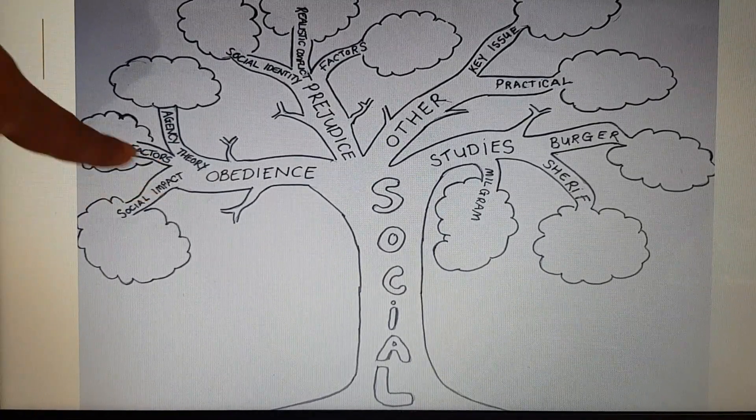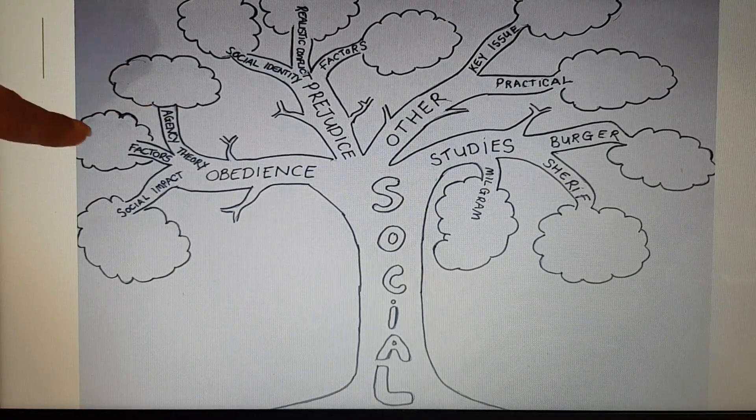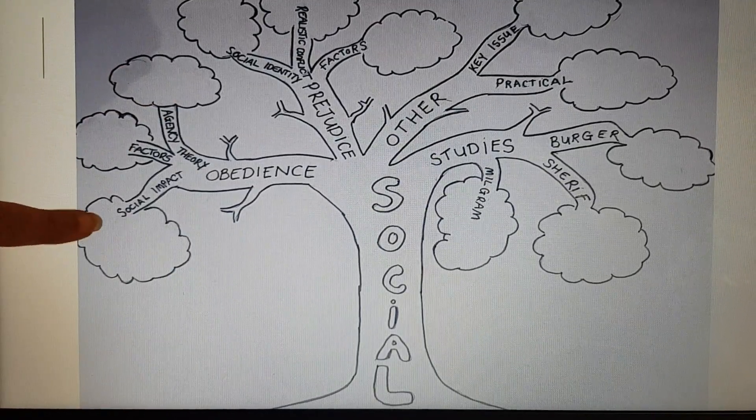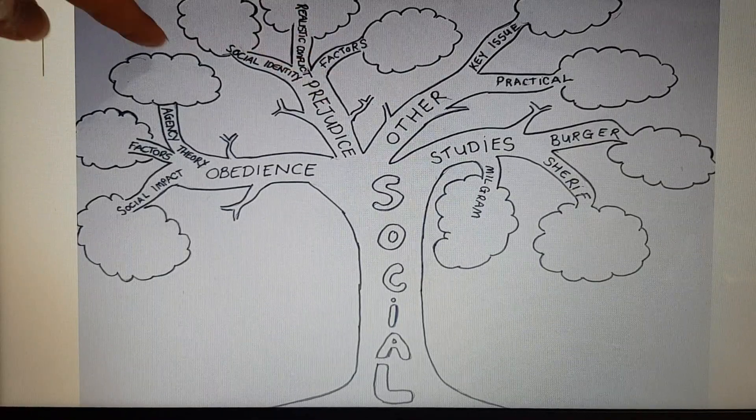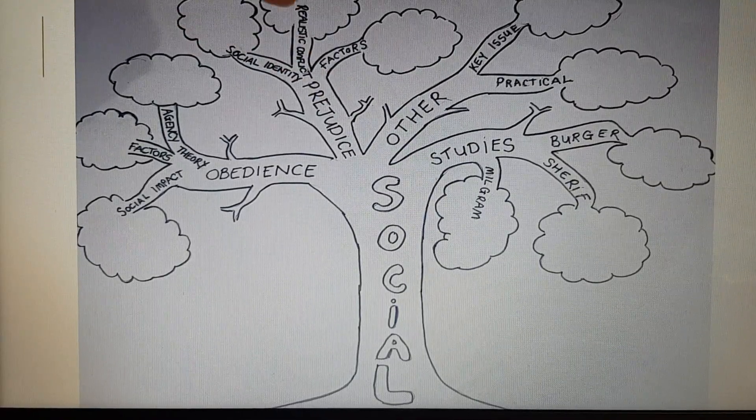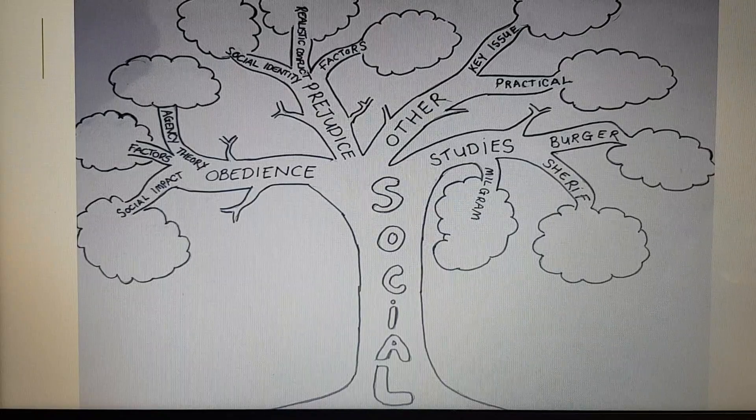So you can see what I've done here is I've put agency theory there, factors affecting obedience and social impact theory there, and then prejudice, social identity theory, realistic conflict theory and factors there.